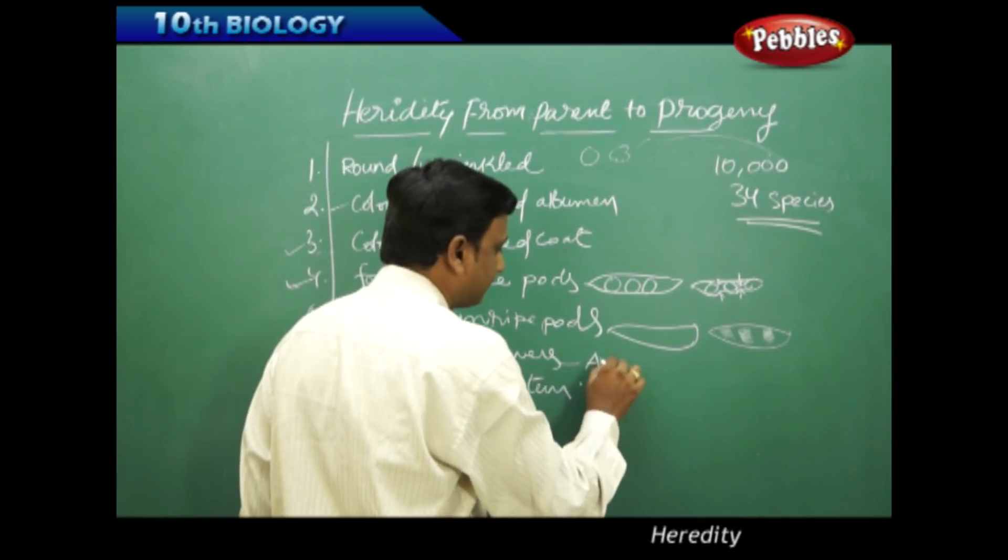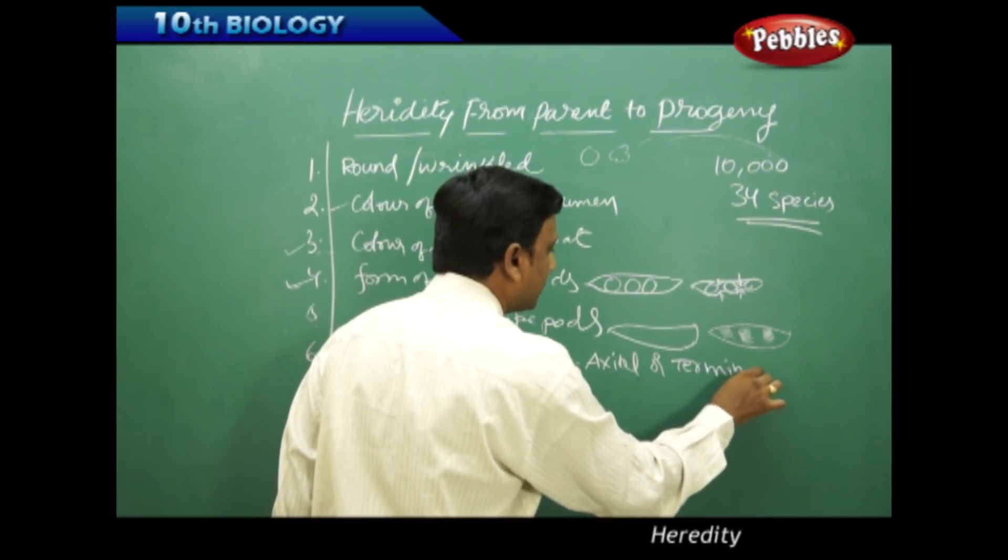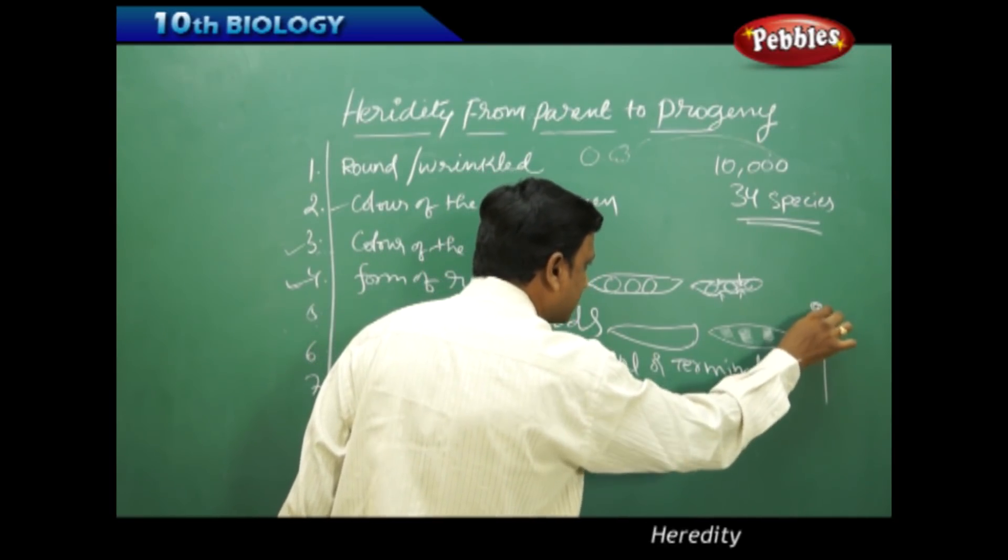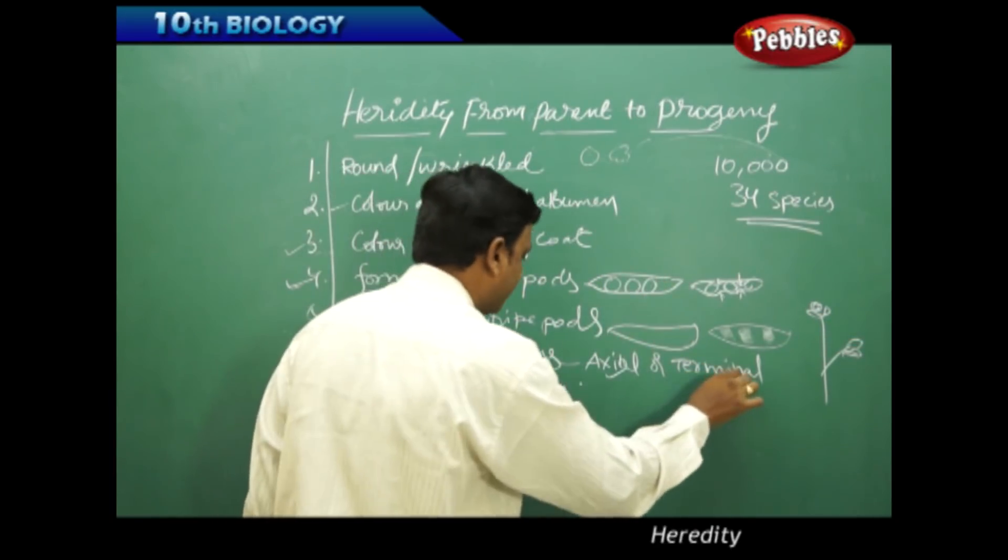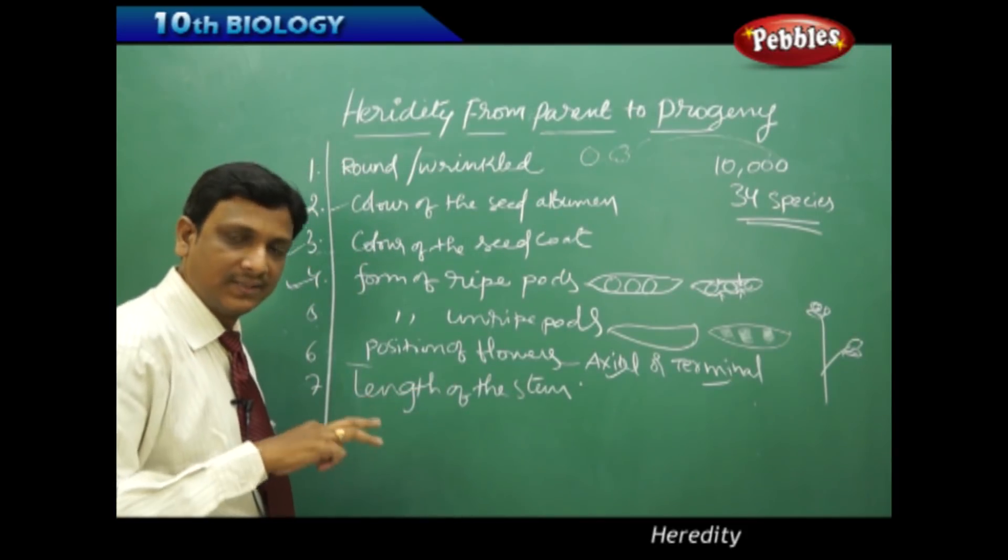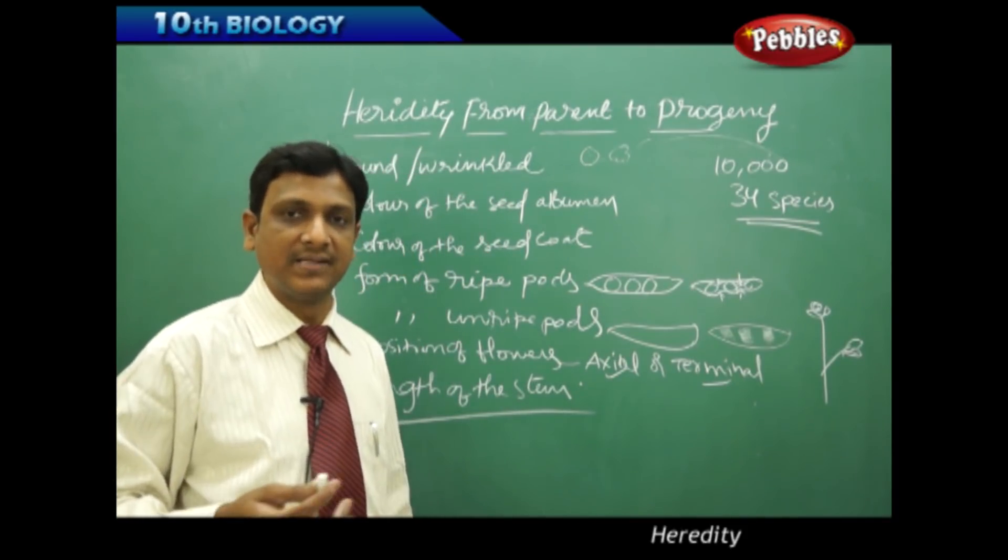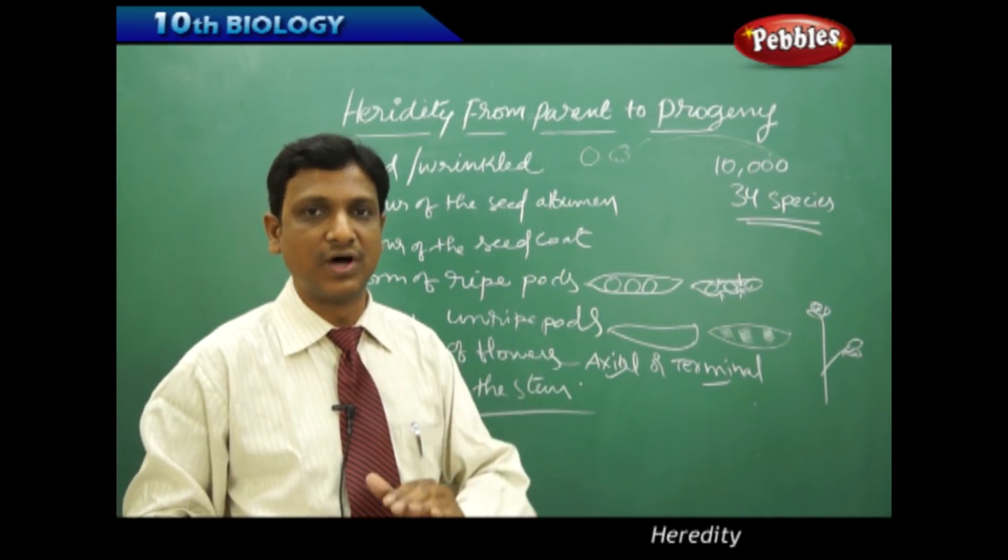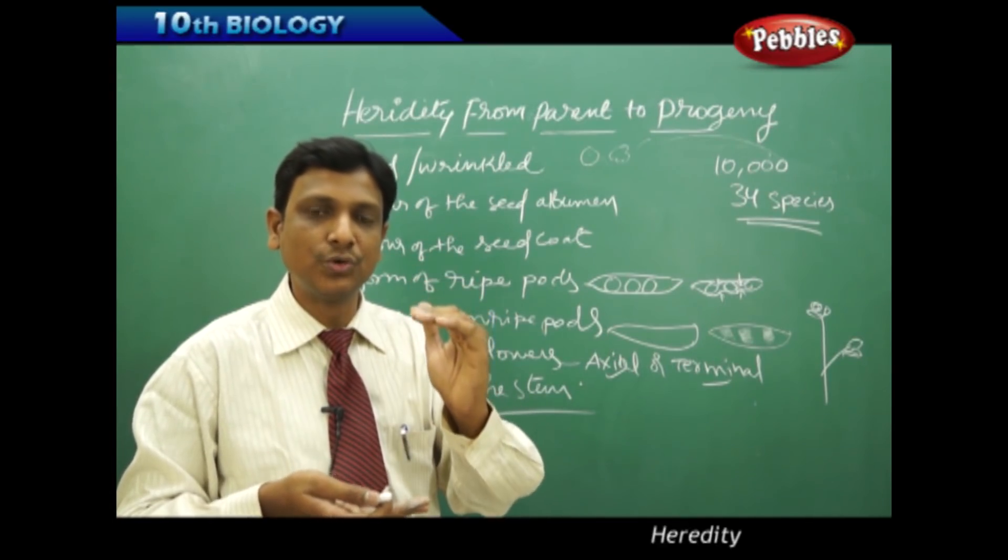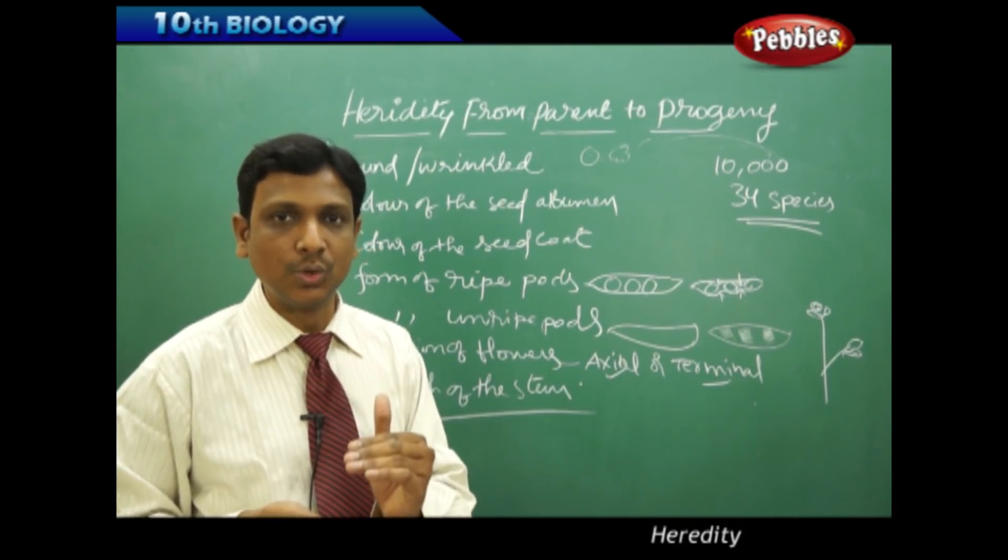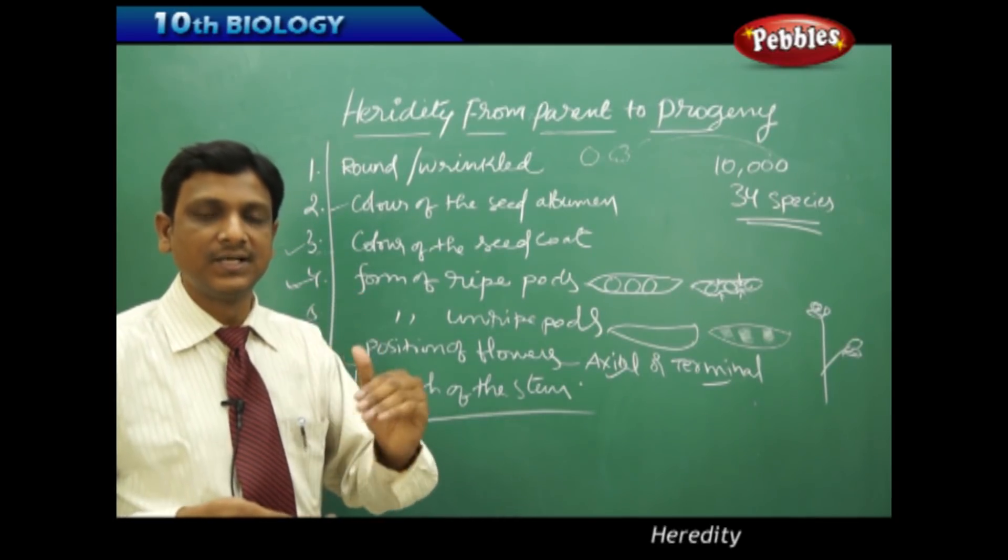Whether they are axial or terminal. Terminal means on the straight stem on the top. Axial means on the side branches. There is a difference. One more contrast pair: length of the stem. Plants either long or lengthy, or dwarf. That means the internodal space - the space between two nodes on a stem - is less if it is dwarf, and if the length is more it is called a tall plant.